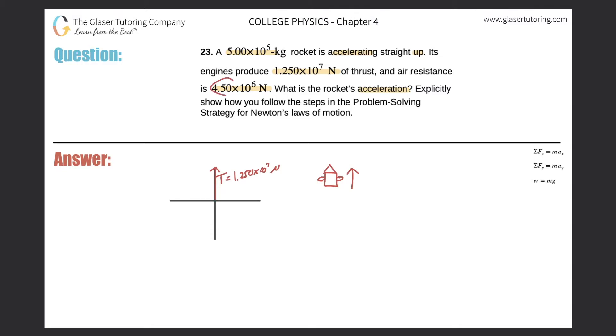It also tells us that we have air resistance of 4.5 times 10 to the 6. What direction does that point? If you're unsure, think about does it impede the motion or does it enhance the motion? It's going to impede the motion. Air resistance slows you down, it's a force that opposes motion. So therefore, if I have motion going up, that air resistance, if it opposes it, must be going down.